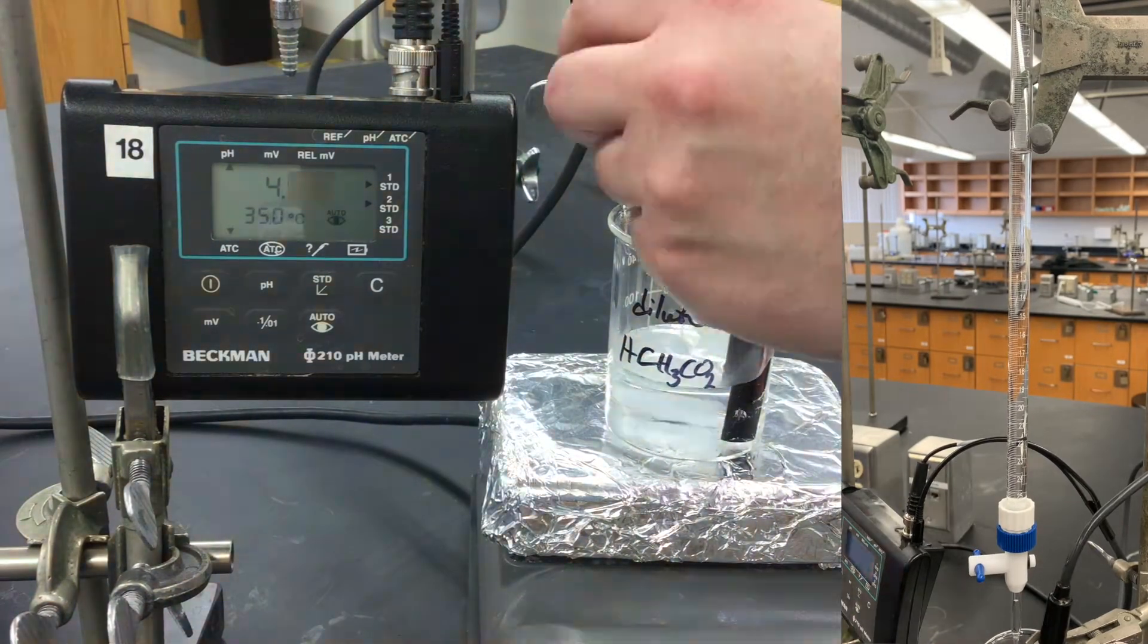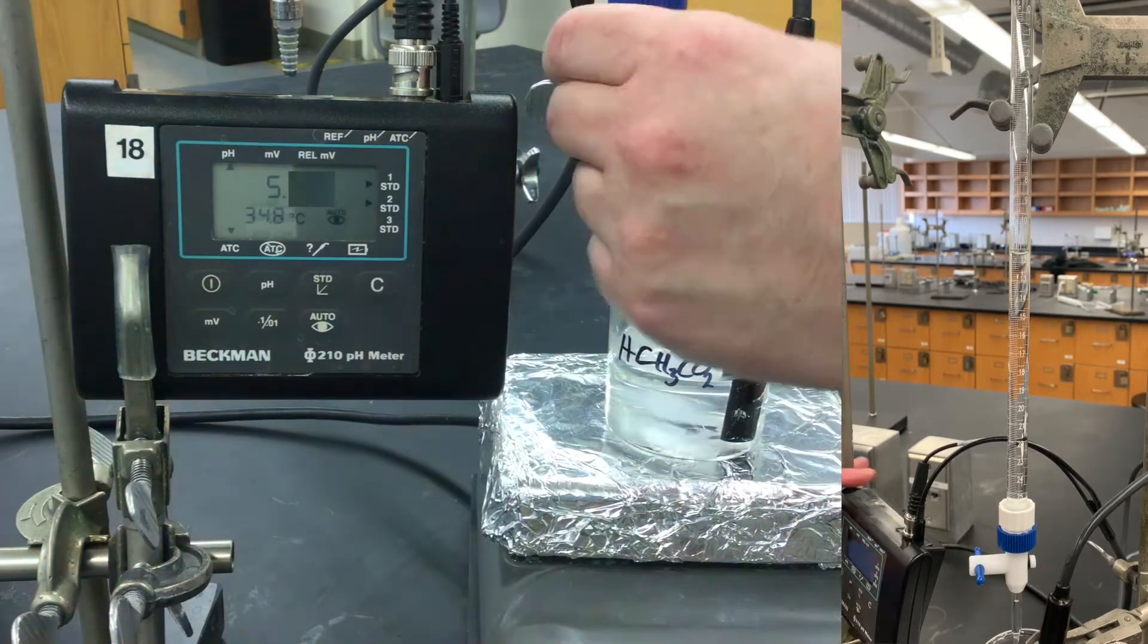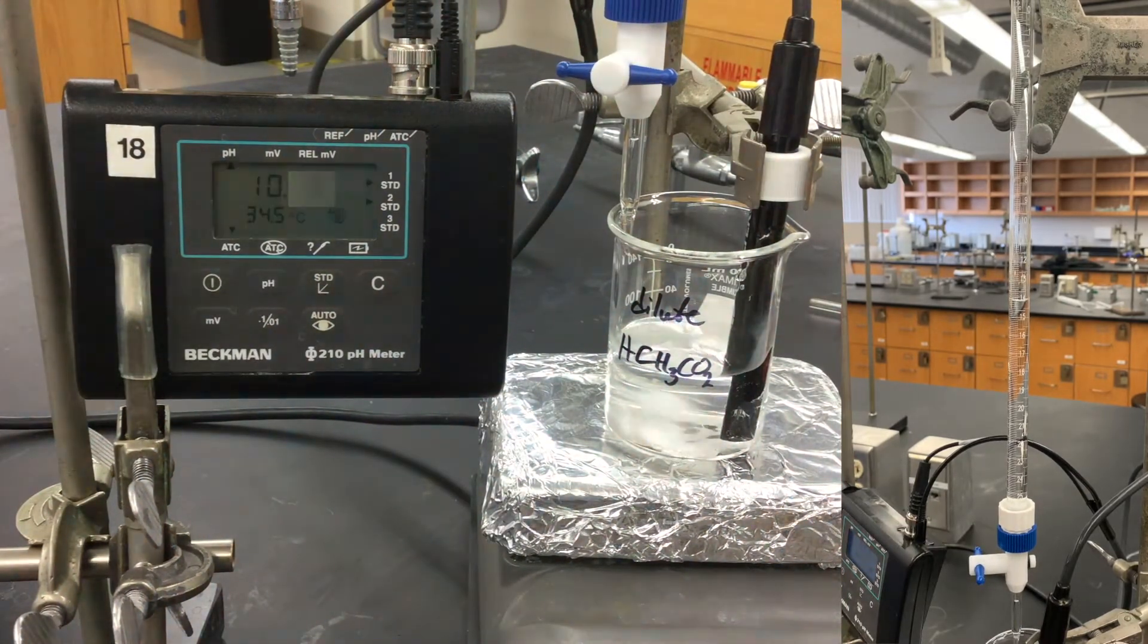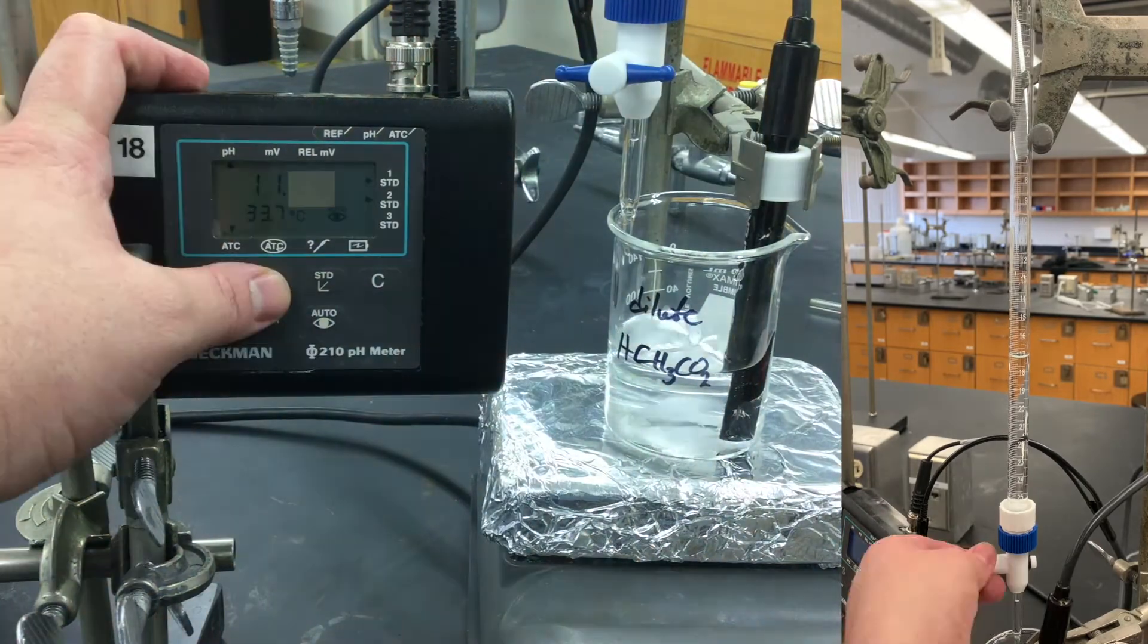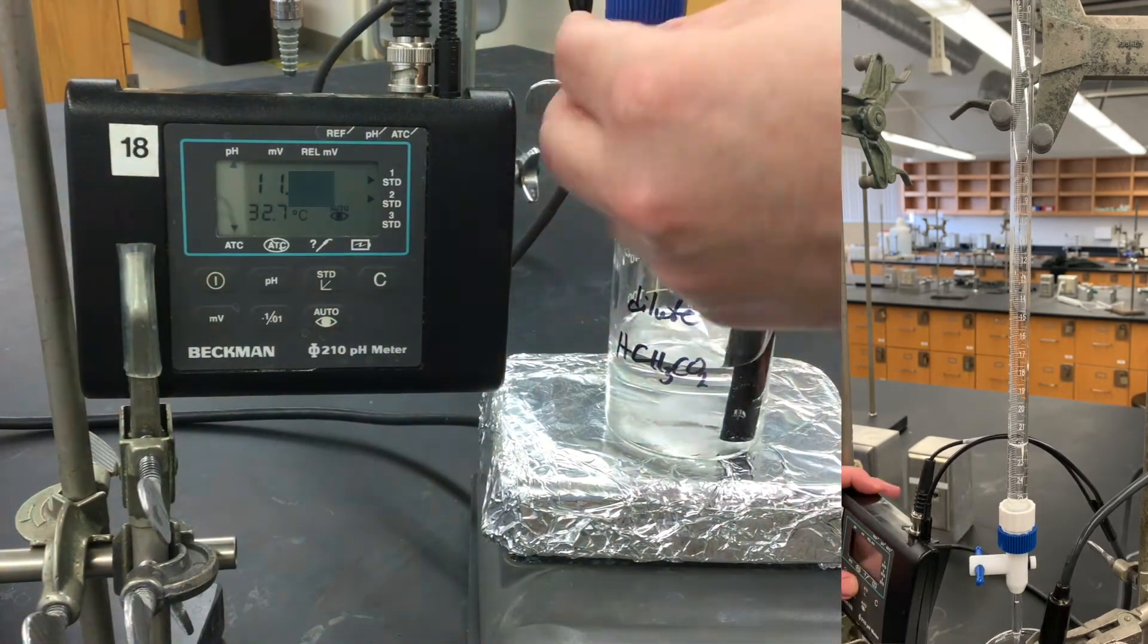So now we're going to go through and add half a ml of sodium hydroxide at a time. Between each one, clicking pH, waiting for the reading to finish. That eye will stop blinking when the reading is finished. And we will go through that until we've gone through the entire burette.